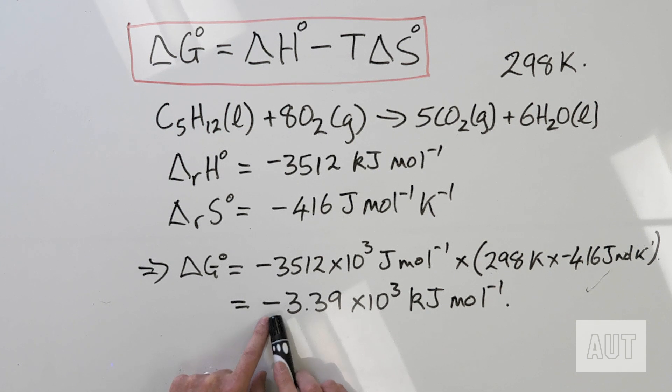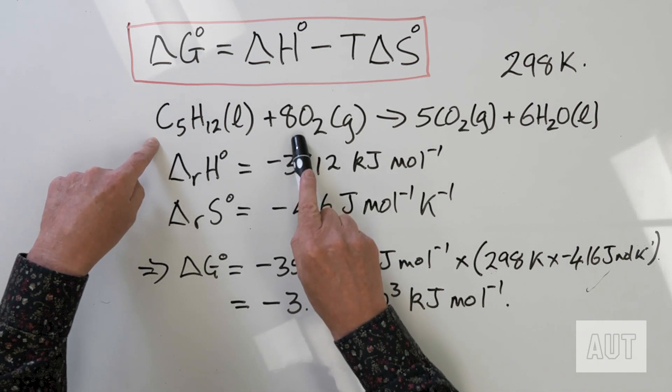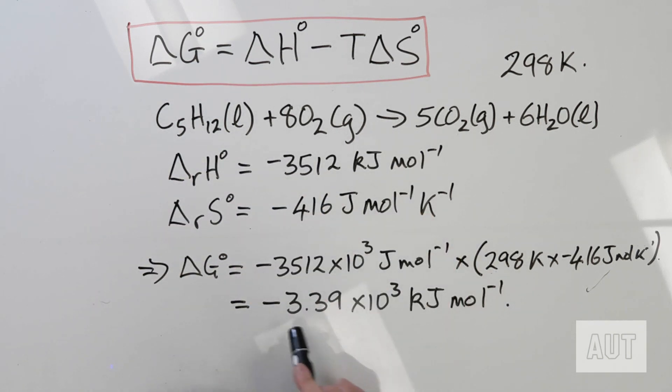What's important here is not really the numerical value but the sign — the sign is negative. From what we said before, if ΔG for a particular process is negative, then you would expect that process to be spontaneous; once started, it should occur by itself without any external influences. Here we have a hydrocarbon burning in oxygen — you'd expect that to be a spontaneous process, and it most definitely is. Let's have a further look at this equation.